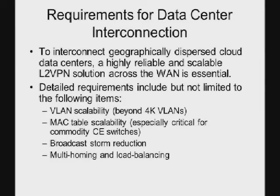The third is broadcast storm reduction — for example, how to reduce the ARP broadcast impact on network performance and host performance, and how to avoid unknown unicast flooding. The fourth is multi-homing and load balancing, to increase high availability and to optimize the backbone bandwidth utilization.